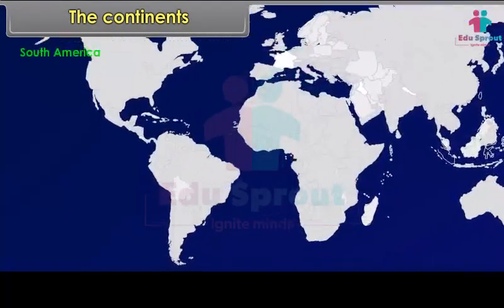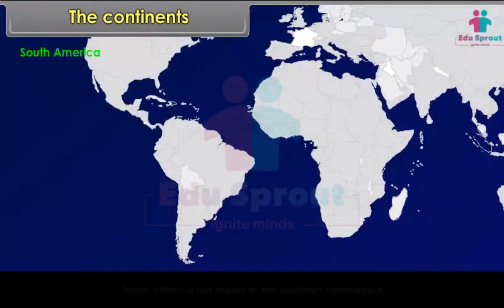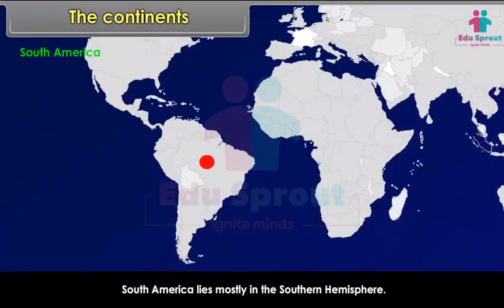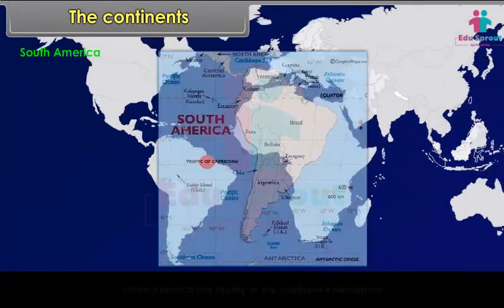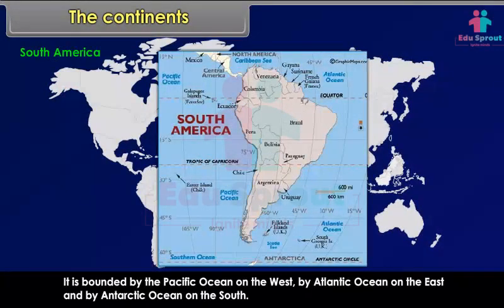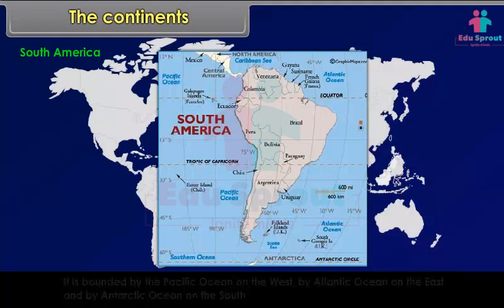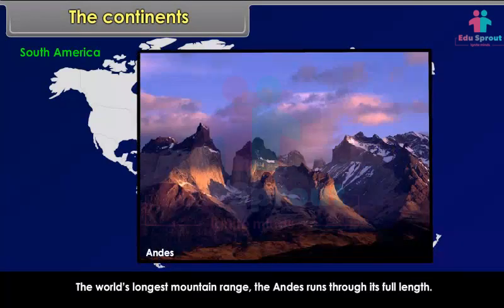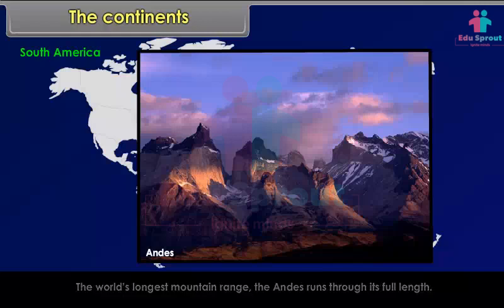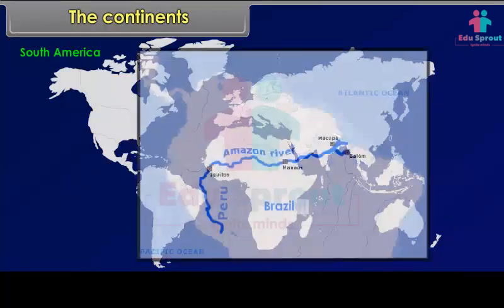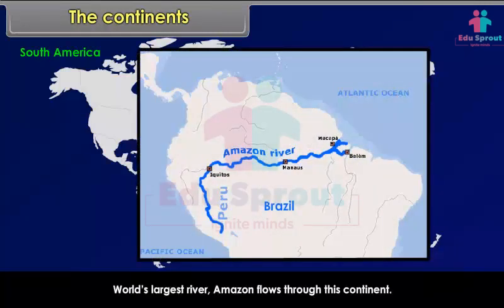South America lies mostly in the southern hemisphere. It is bounded by the Pacific Ocean on the west, the Atlantic Ocean on the east, and the Antarctic Ocean on the south. The world's longest mountain range, the Andes, runs through its full length. The world's largest river, the Amazon, flows through this continent.